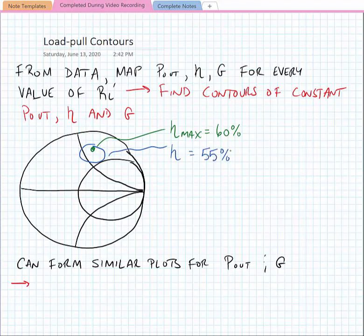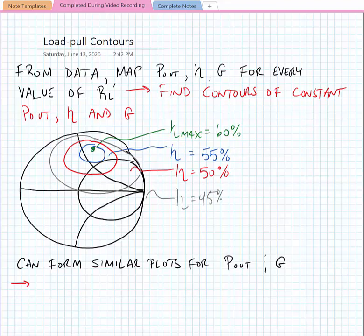And then if we change the impedance a little bit more, we might find another contour that would yield an efficiency of say 50%, and finally another contour that would yield an efficiency of say 45 percent. And we could keep doing this for different impedances across the chart.